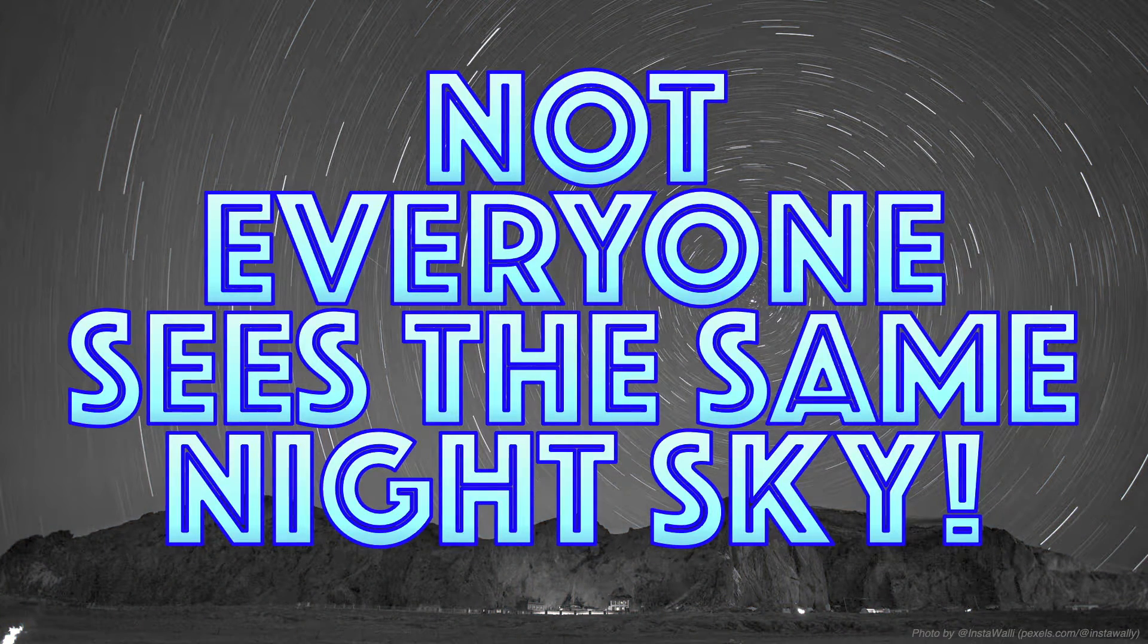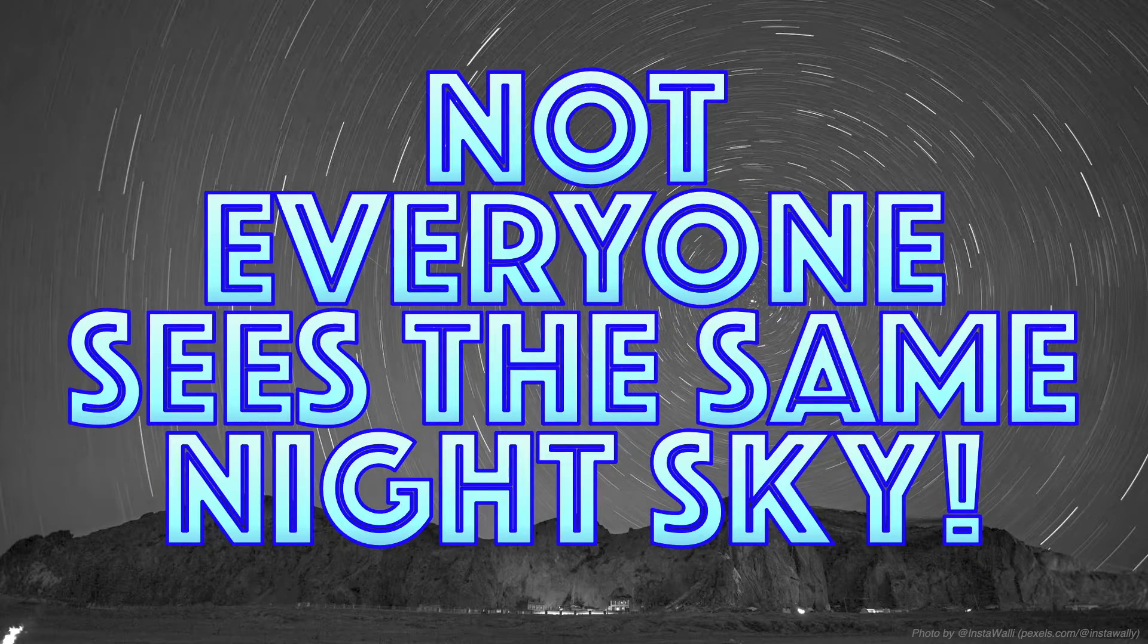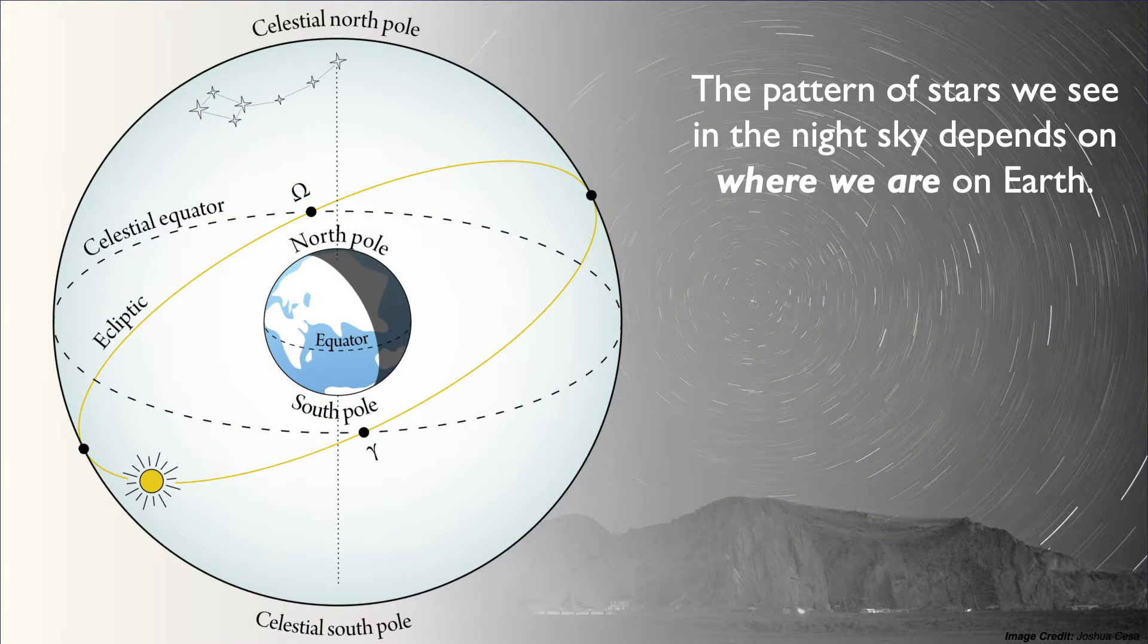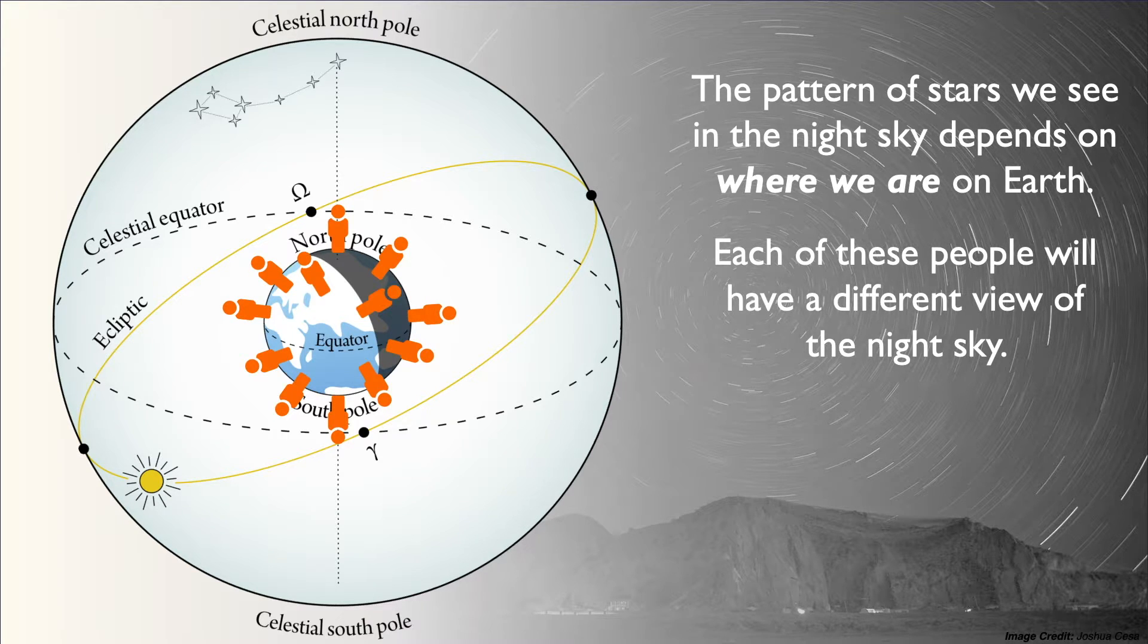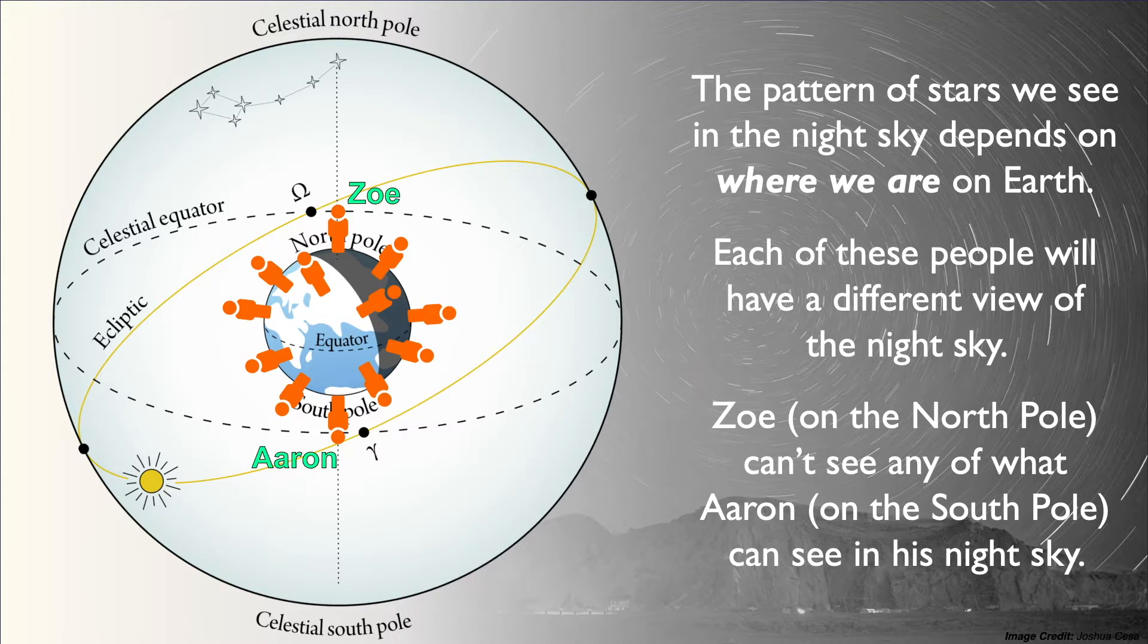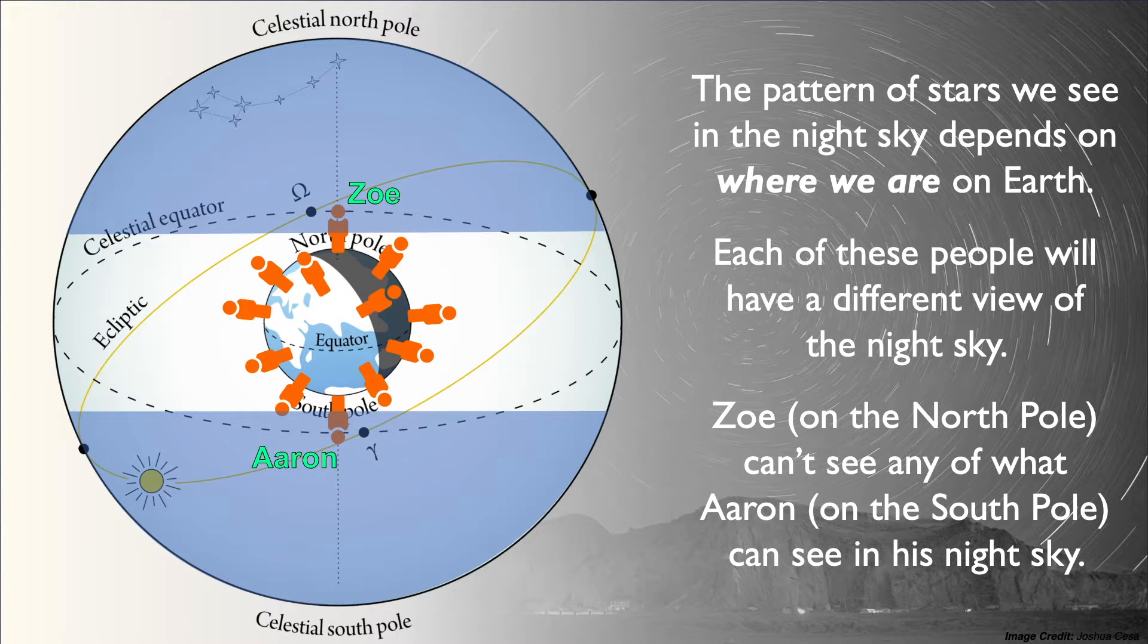But not everyone sees the same night sky. The unique pattern of stars and constellations that we see in the night sky depends on where we are physically located on Earth. Each of these people, located at various spots around the globe, will have a different, unique view of their night sky. Zoe, for example, on the North Pole, can't see any part of the night sky that Aaron sees from the South Pole.